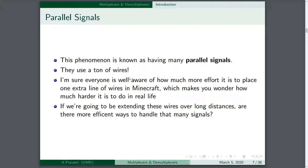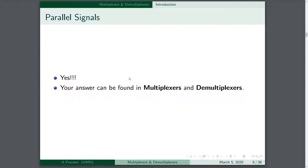This phenomenon is known as having many parallel signals, and they just use a ton of wires. At this point in the class, I'm sure everyone is aware of how much effort it takes to place an extra line of wires in Minecraft — wires, repeaters, all that stuff. It really makes you wonder how much harder it is to implement in real life. So if we're going to be extending these wires over long distances, are there maybe more efficient ways to handle that many potential signals? It turns out there is — the answer can be found using multiplexers and demultiplexers.